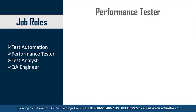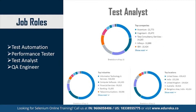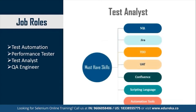Must-have skills to become a Performance Tester include knowledge of Selenium, Cucumber, Java API, APM, Jira, Python, and Automation Tools. For the Test Analyst profile, Bangalore is one of the top preferred locations after US, UK and Australia, and companies like Accenture, Cognizant and TCS are top recruiters. Key skills include SQL, Jira, UAT, TDD, Confluence, scripting languages like Python and JavaScript, as well as automation tools.